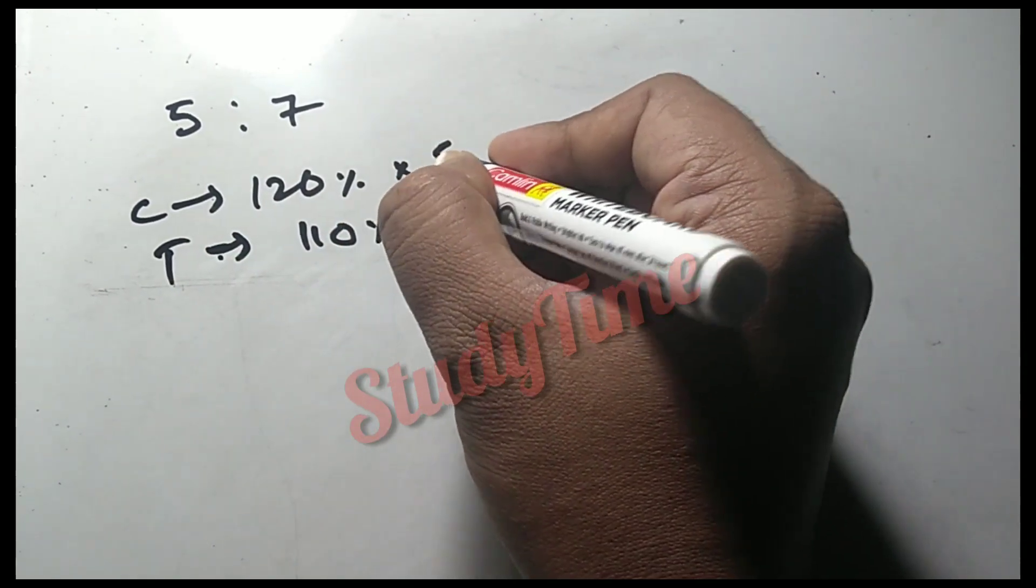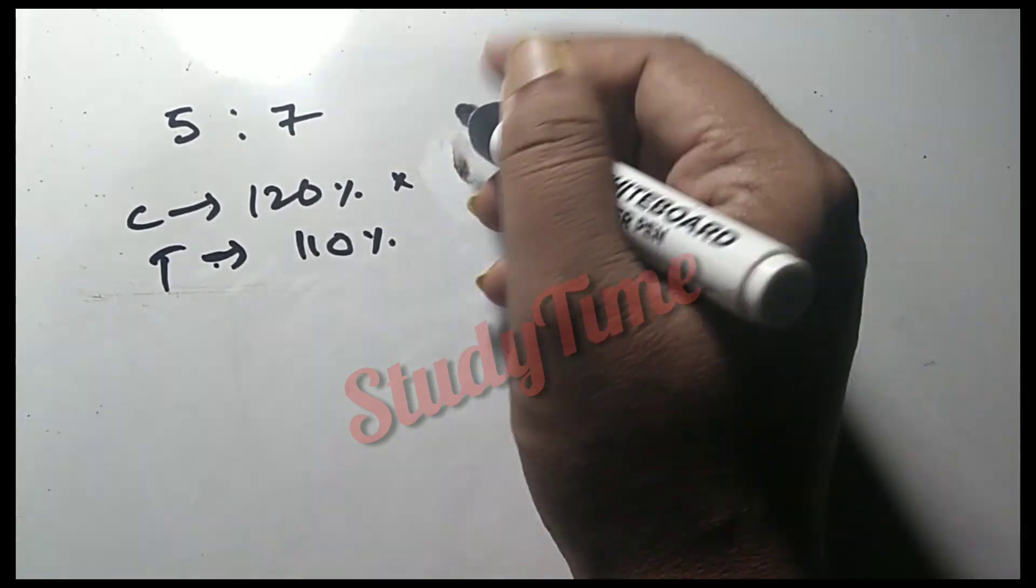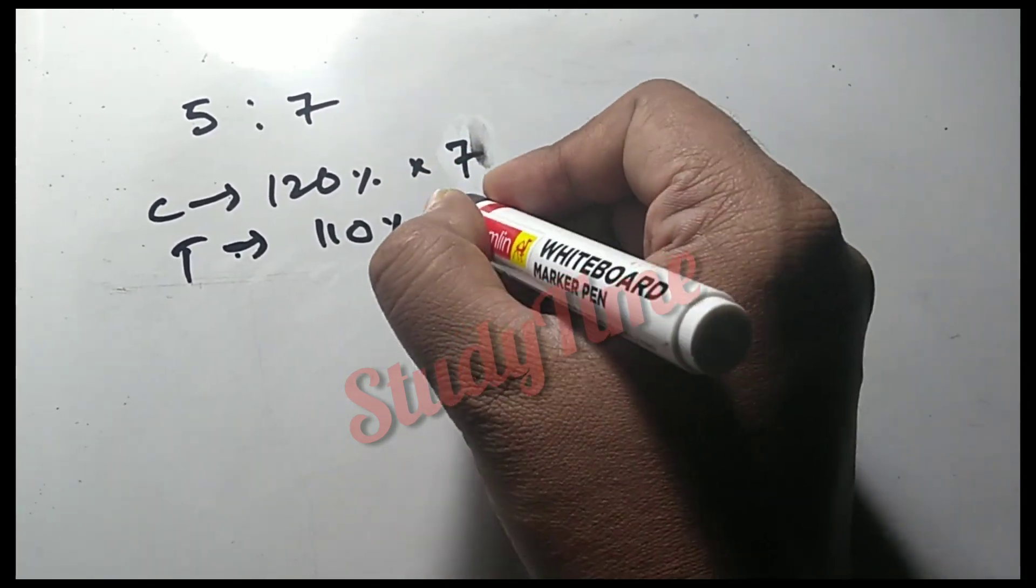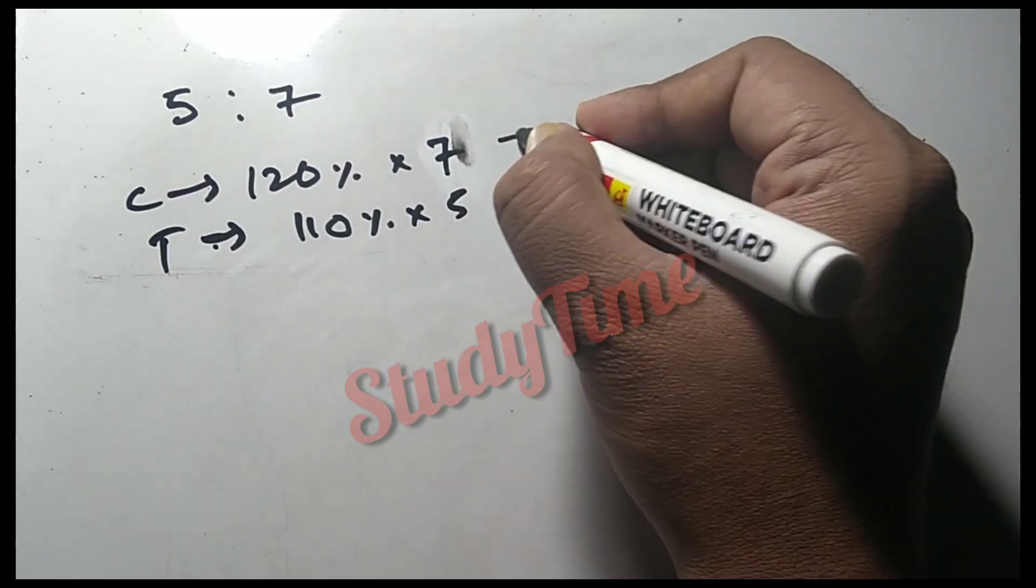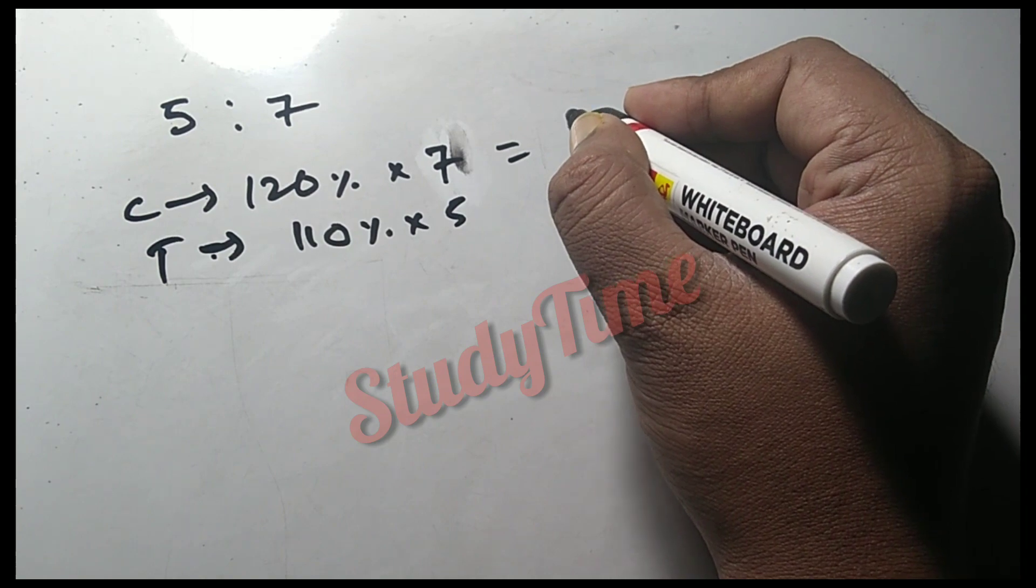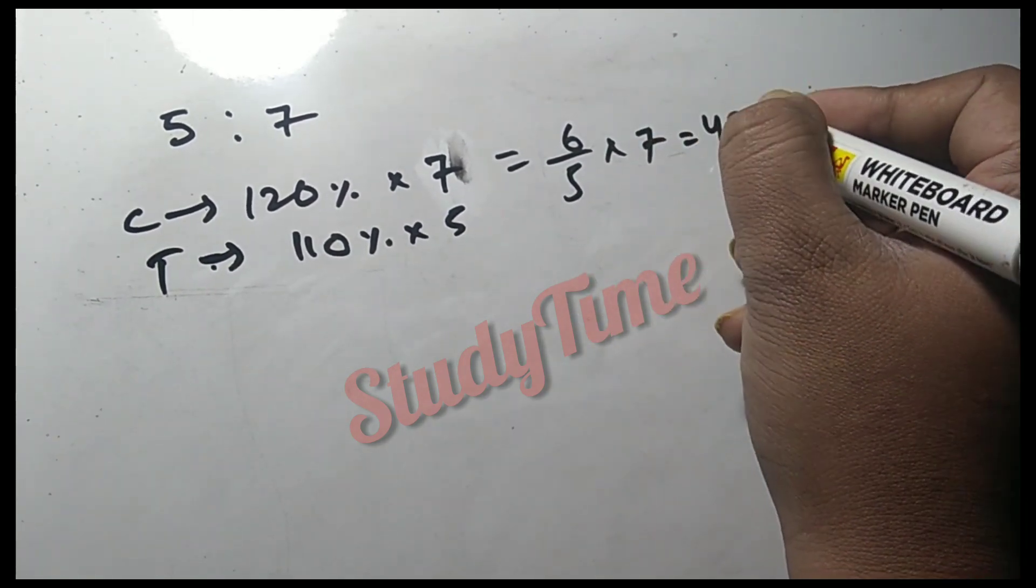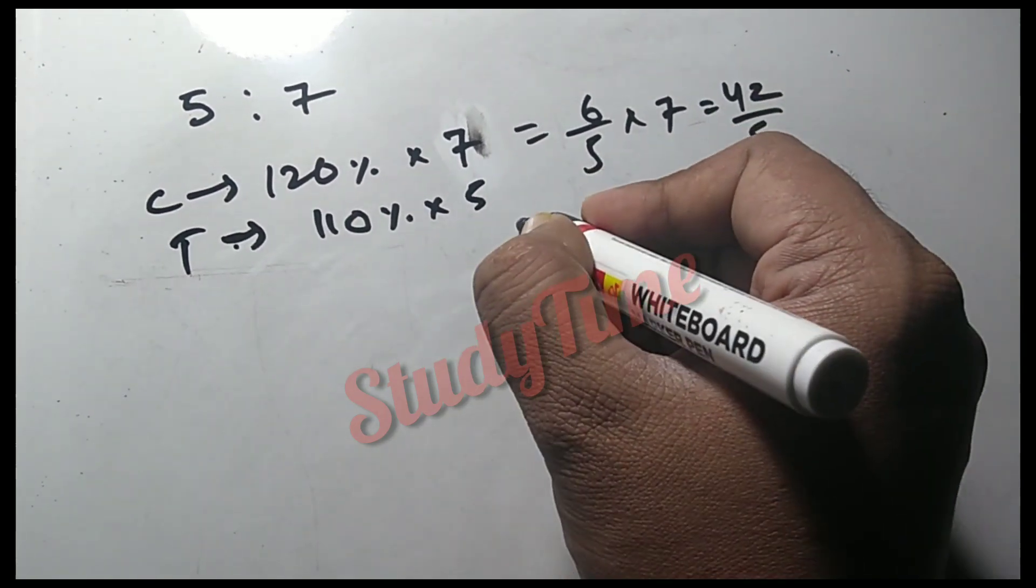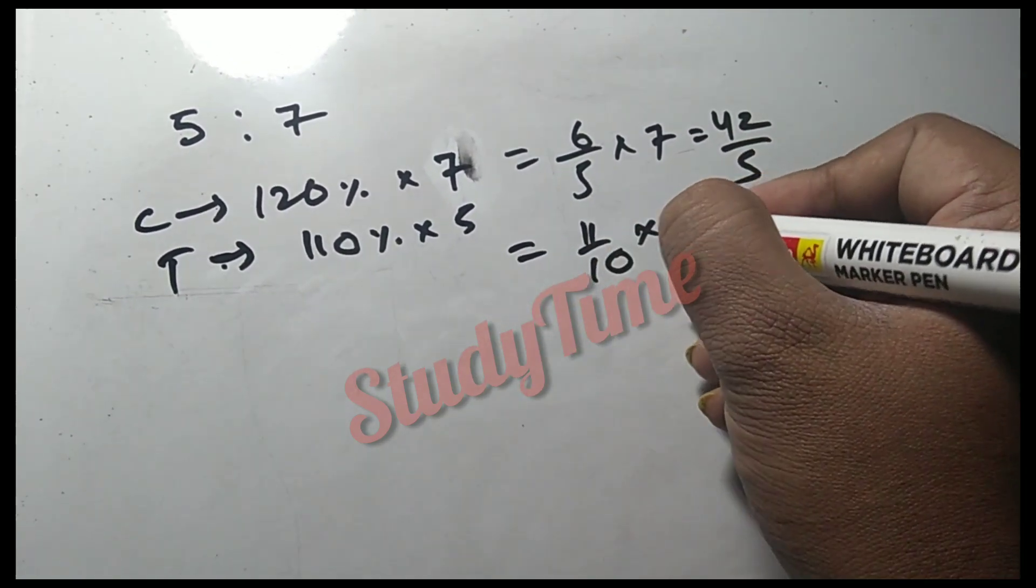The chair is 7 times 120%, so 7 into 120 percent, which is 6 upon 5 times 7, equals 42 upon 5. The table is 110% of 5, which is 10 times 5.